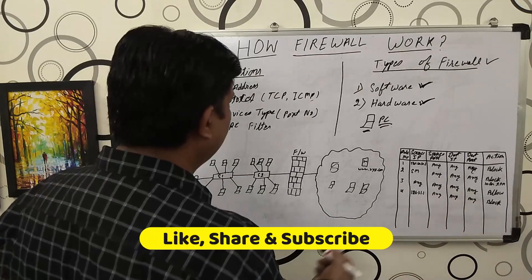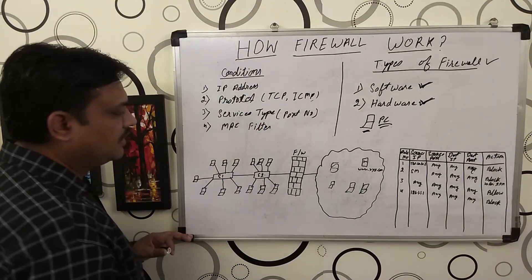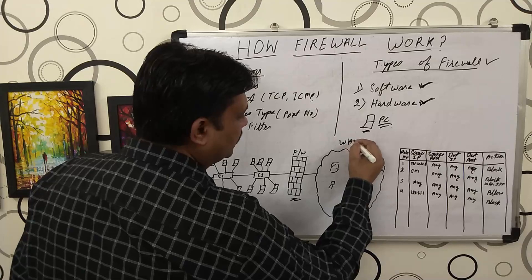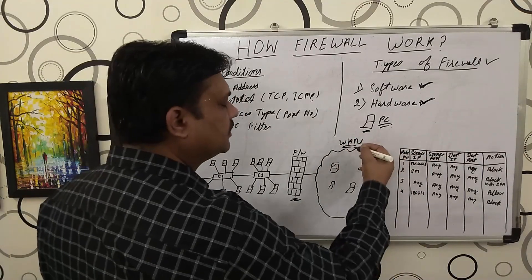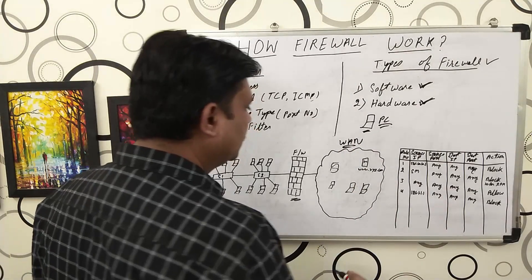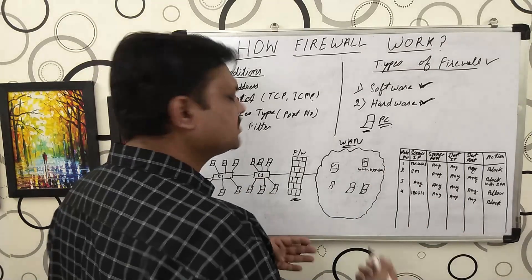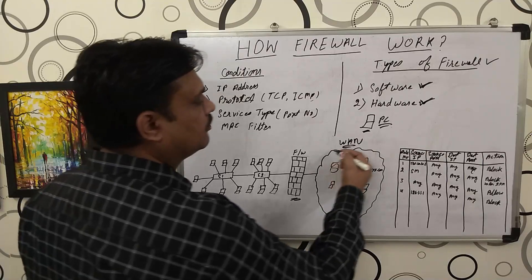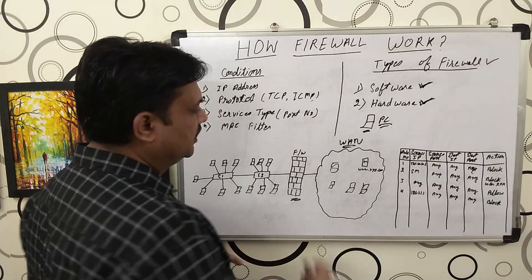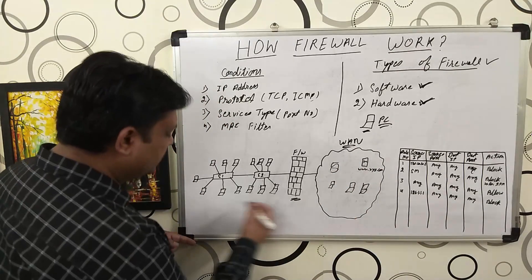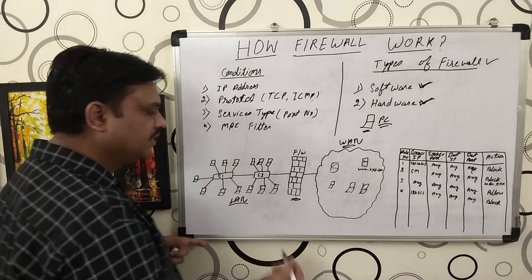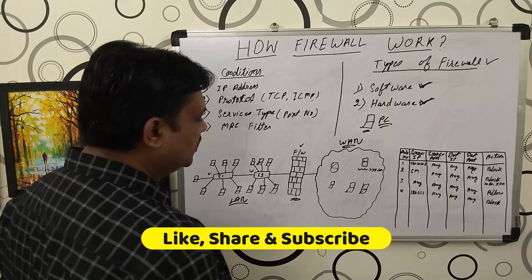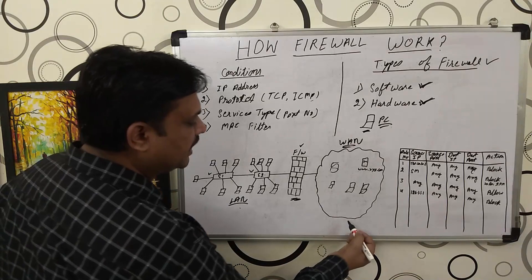Now let's talk about the hardware firewall. The hardware firewall can protect your local area network. Here is a firewall — this is the WAN, or internet, which is known as an unsecure network because there are many hackers, servers, and networks, but nobody is protecting the internet. This is your local area network, which is a private network. You have switches and the firewall is placed between the private and public network.